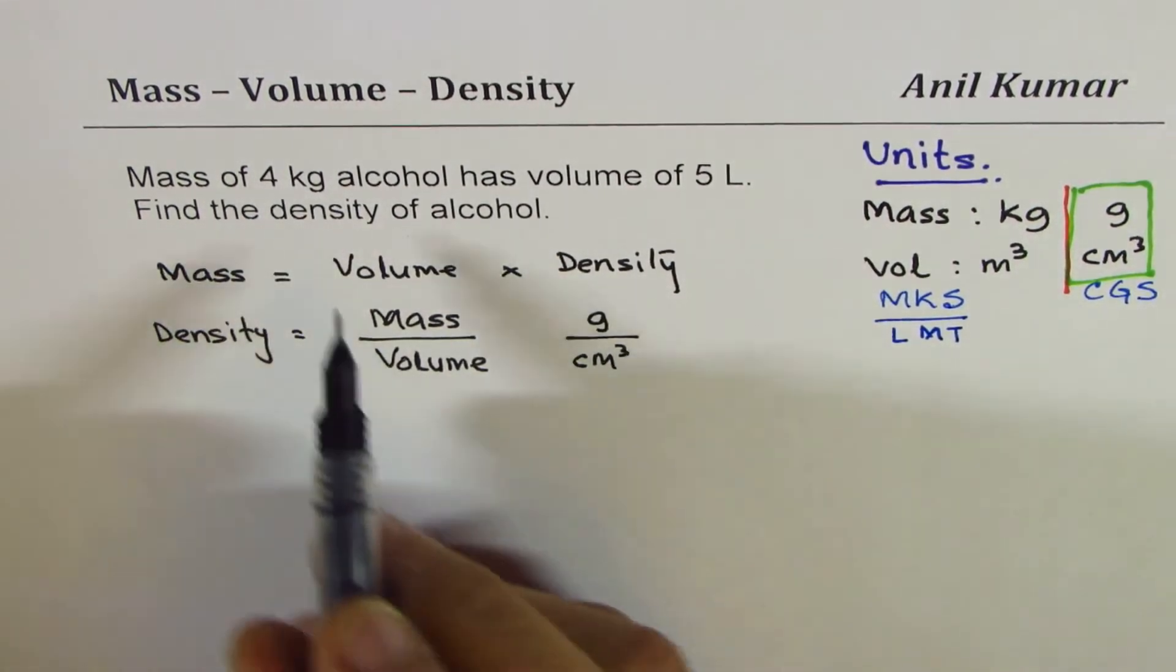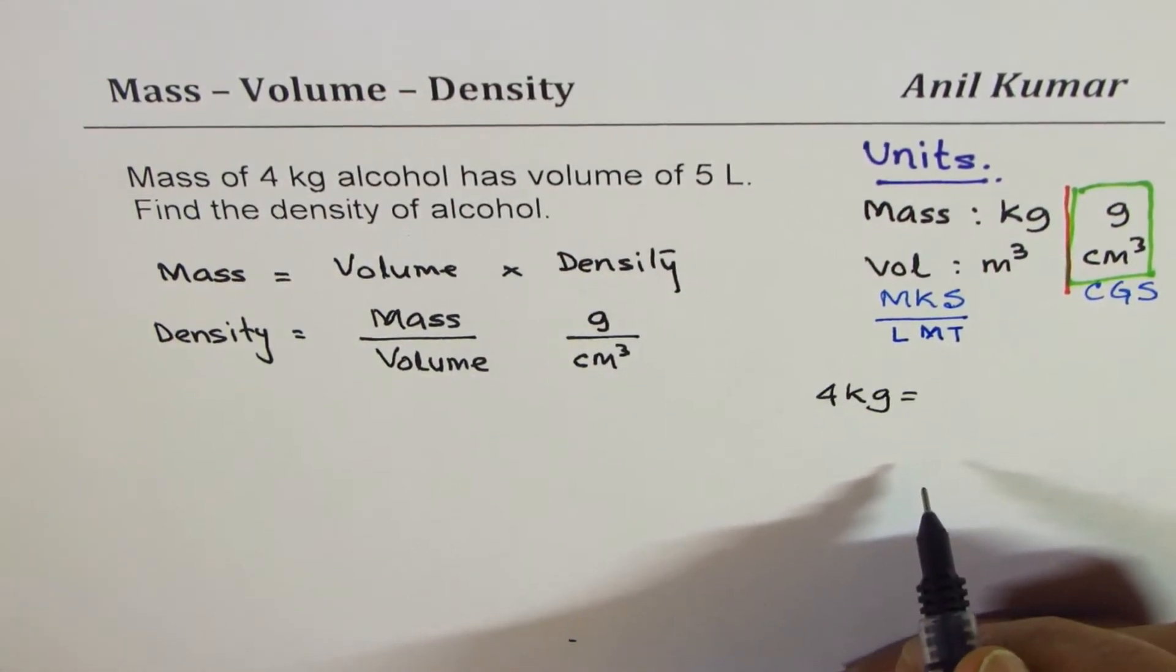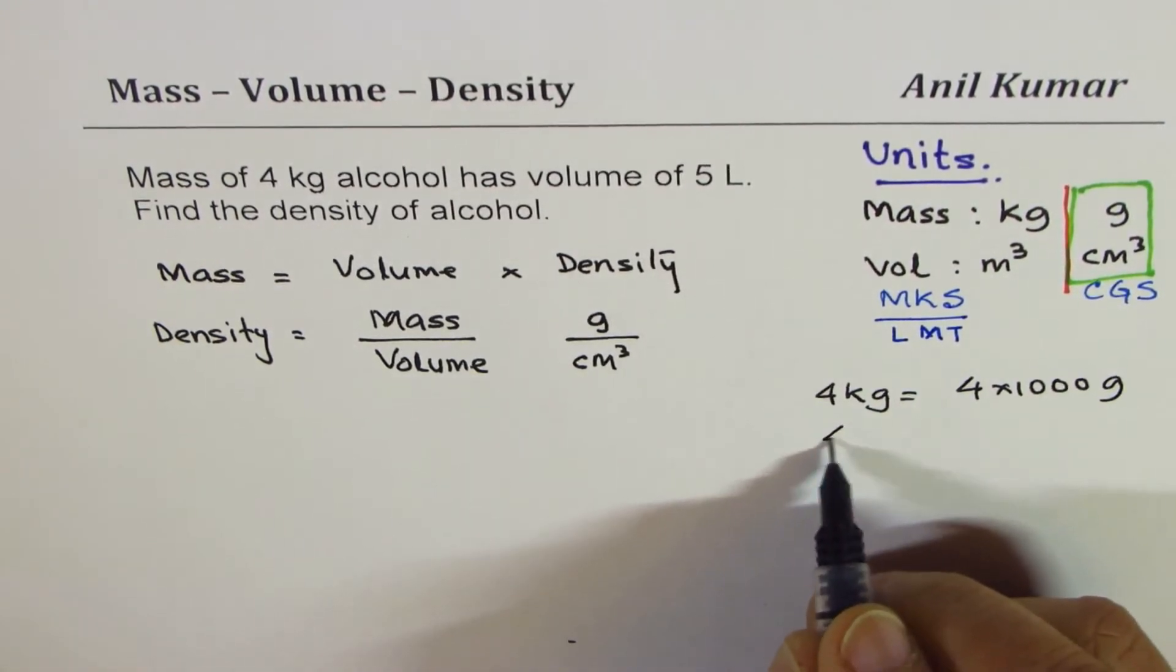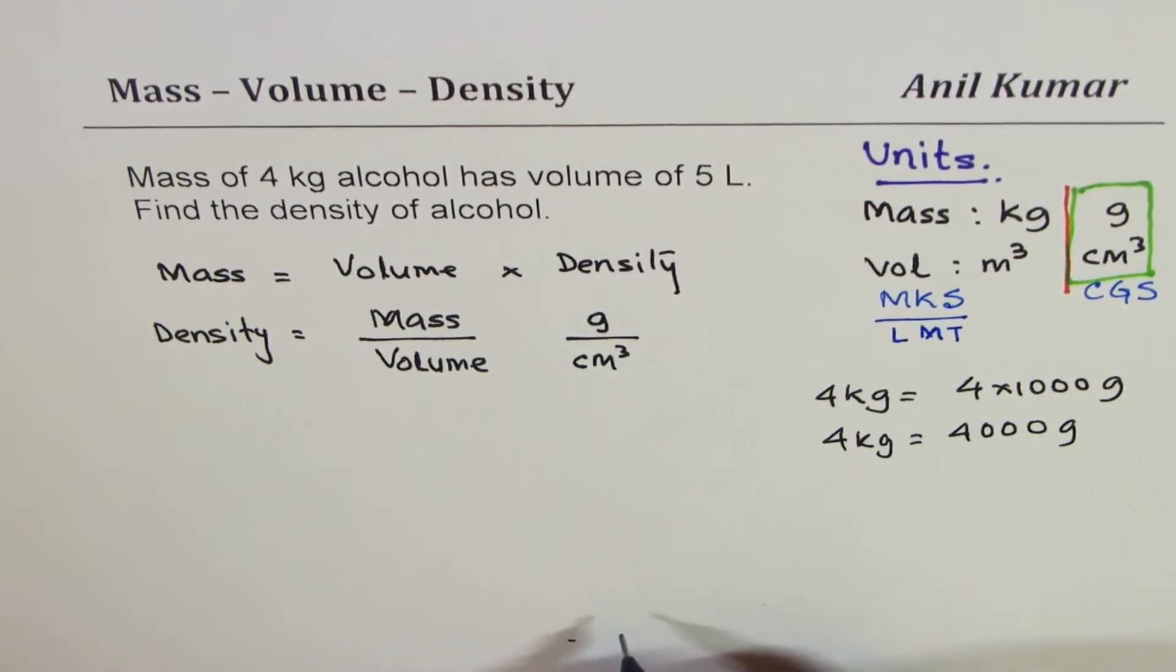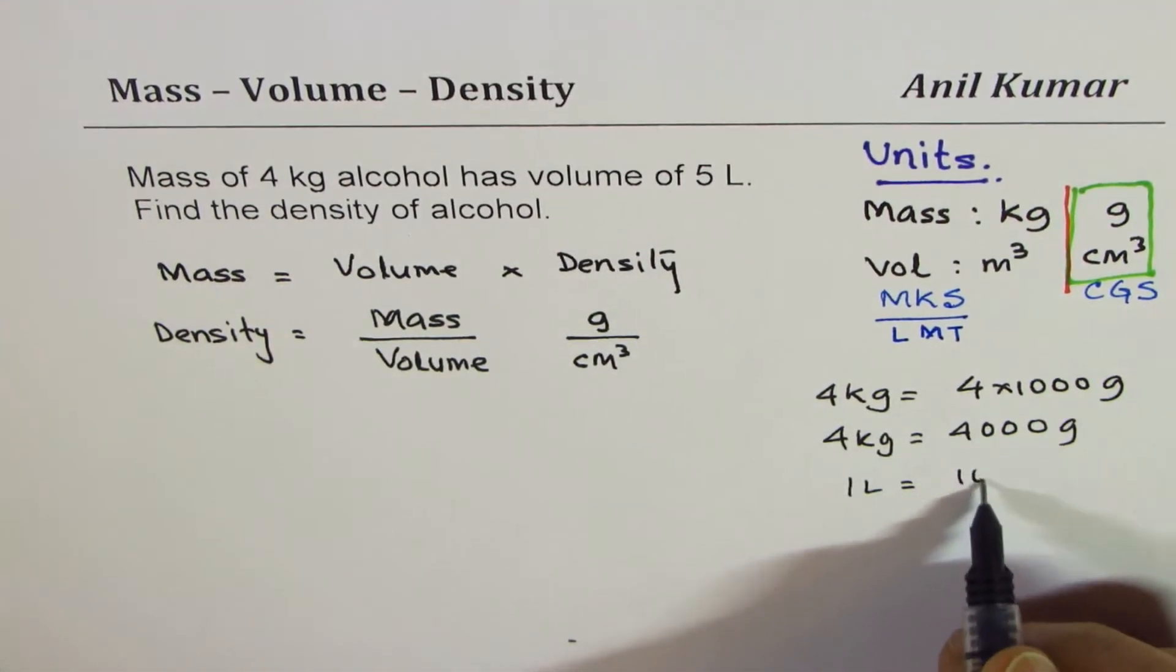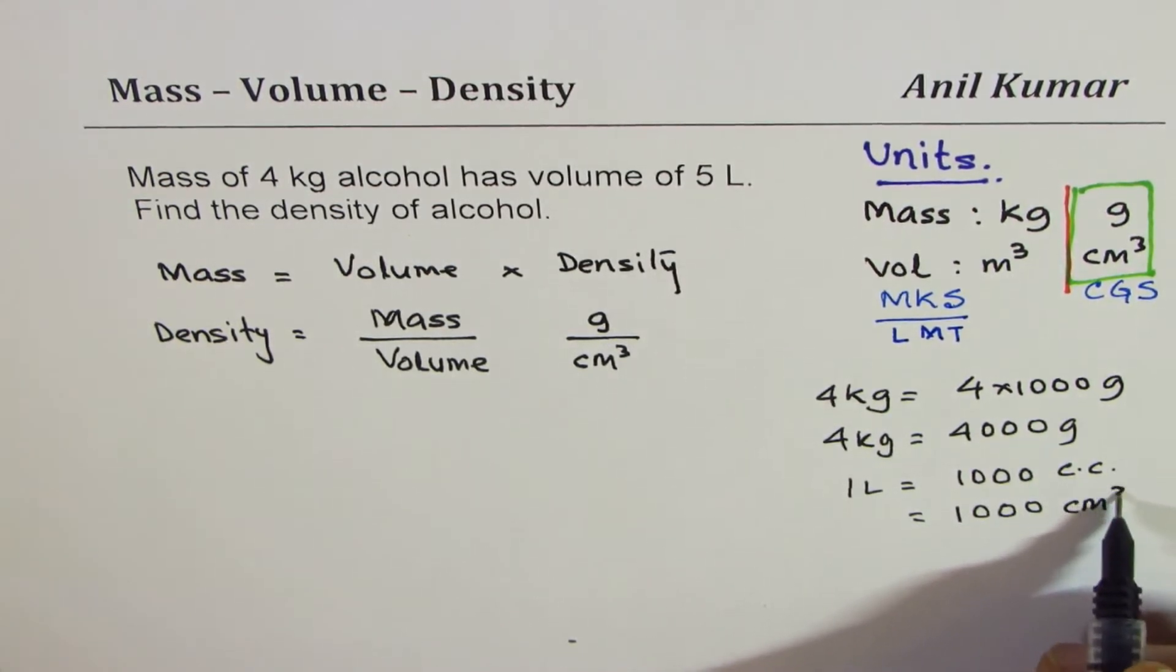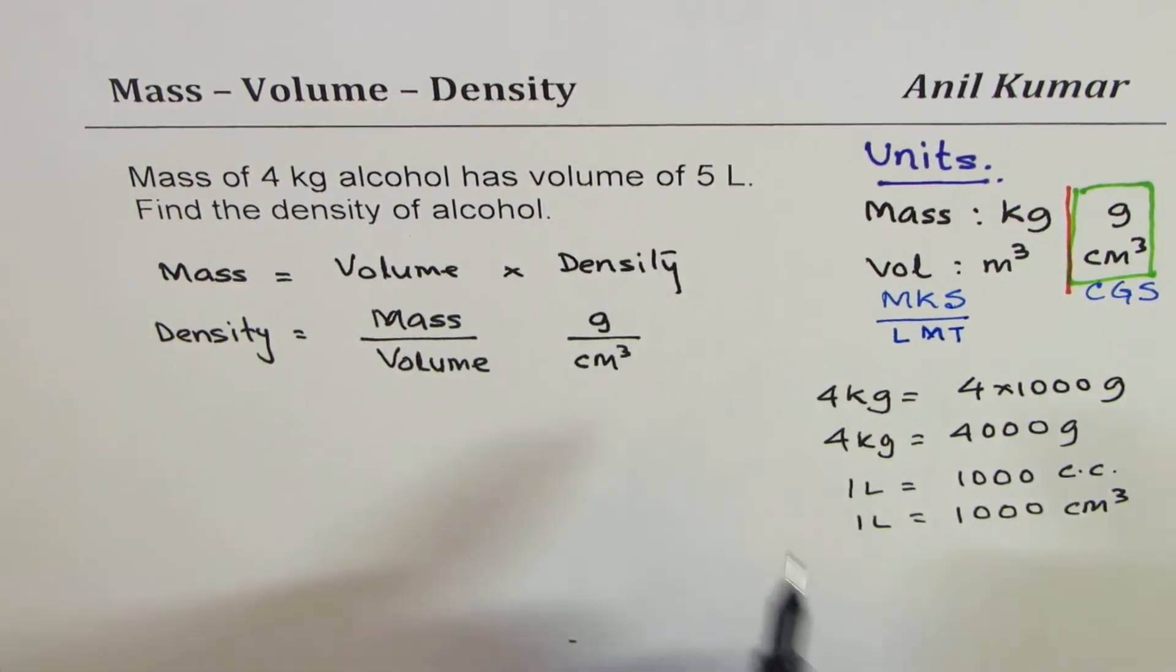So let us convert the units. Four kilograms, four kilograms equals how many grams? Four times thousand, that's the conversion. That means four kilograms is four thousand grams. Now let's talk about liters. One liter is one thousand CC, which is same as centimeter cube. So one liter is thousand centimeter cube.